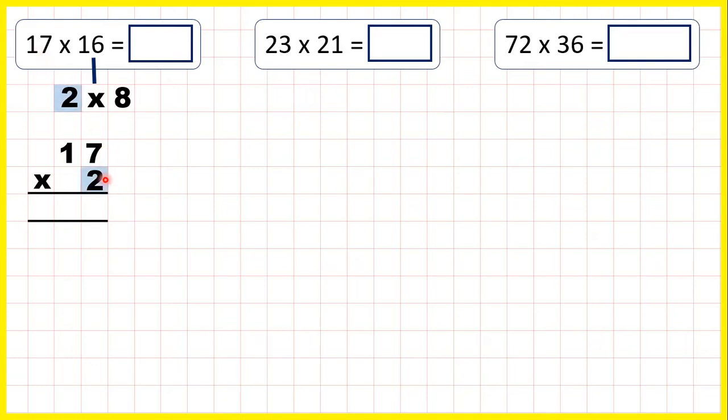So we can multiply 17 by 2. That's the first number in our factor pair. And then we can take our answer and multiply by the 8.